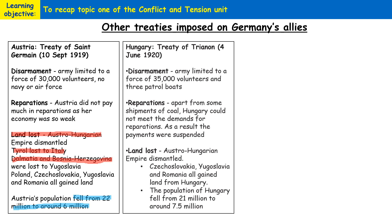Then we have the Treaty of Trianon on the 4th of June 1920. Similarly to the treaty imposed on Austria, the Hungarian army was limited to 35,000 volunteers and only three patrol boats. Hungary could not meet the demands for reparations, so payments were suspended — a little like Austria, repayments weren't strictly enforced. The Austro-Hungarian Empire was dismantled and land was lost to Yugoslavia and Romania, with the population falling from around 21–22 million to just 7.5 million.